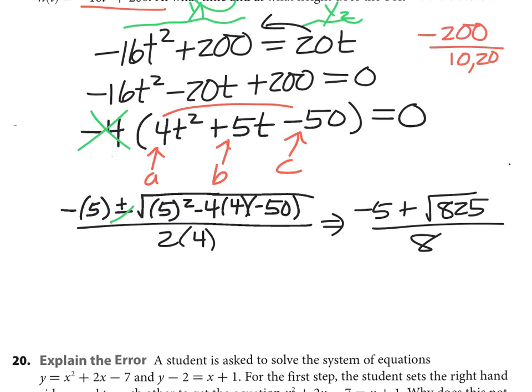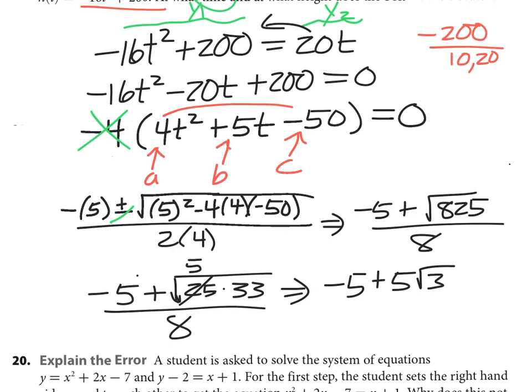So what's the square root of 825? So you gotta try to simplify if it wants a perfect or radical answer. So what will go into 825 that's a perfect square? 25. So that gives you -5 plus—so that's 25 times 33, that gives you 825, over 8. Square root of 25 is 5, so I got -5 + 5√33, all divided by 8. That would be my exact answer. And I'm just going to type that in on my calculator: (-5 + 5√33) ÷ 8 is approximately 2.965.